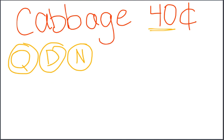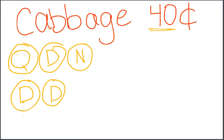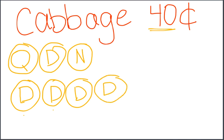Now let me show forty cents another way. I can show it with dimes: ten, twenty, thirty, forty. That's another way to show forty cents — with four dimes, because I can count by tens: ten, twenty, thirty, forty. Thank you.